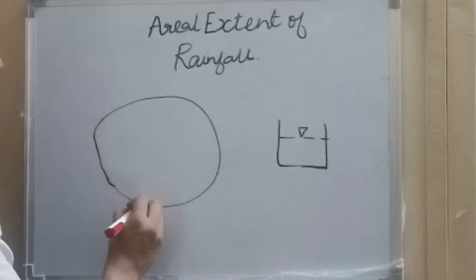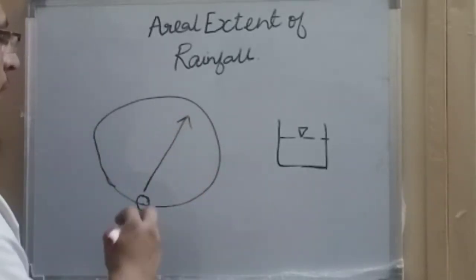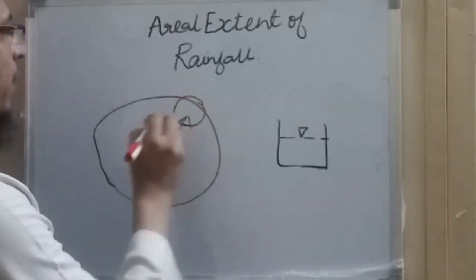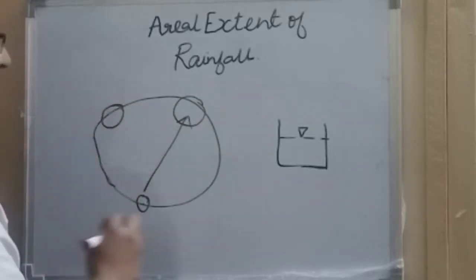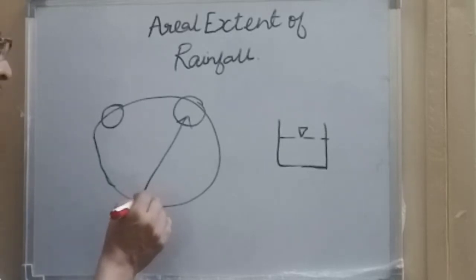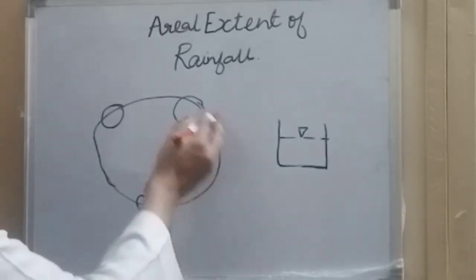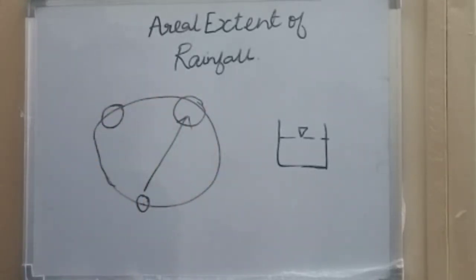But if we have a particular area with a rain gauge located here, we cannot know the extent to which this rainfall is extending - whether it is also happening elsewhere or not. This is the aerial extent of rainfall. Because we measured this depth here, but can we say that in the whole area this rainfall is occurring?